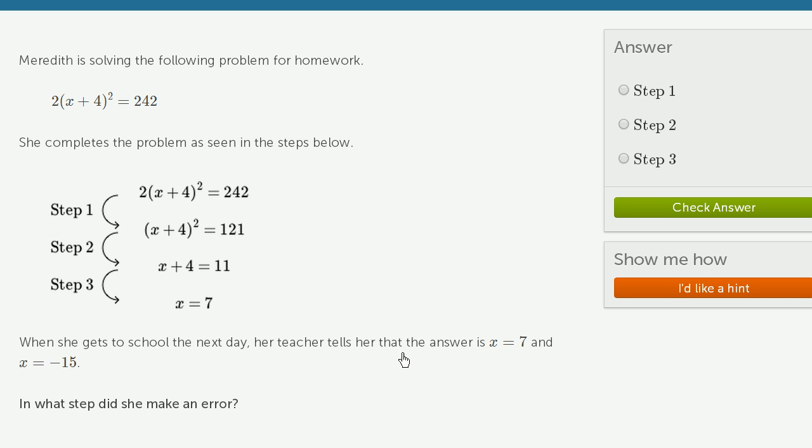When she gets to school the next day, her teacher tells her that the answer is x equals 7 and x equals negative 15. She only got x equals 7 here. In what step did she make an error?